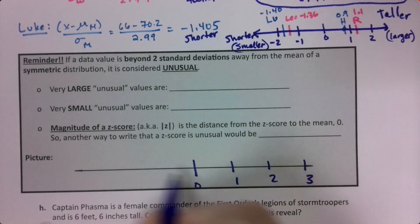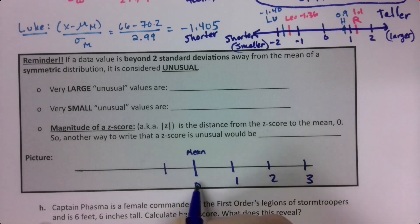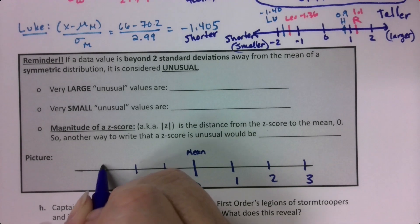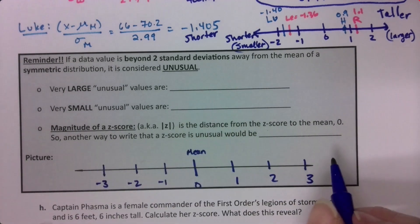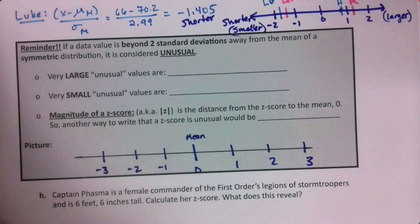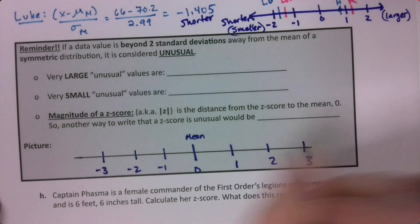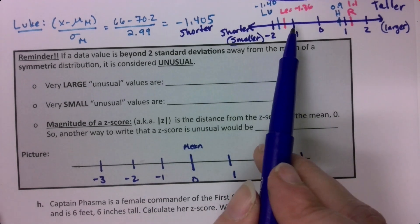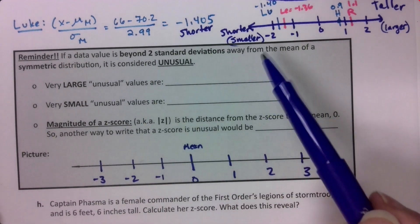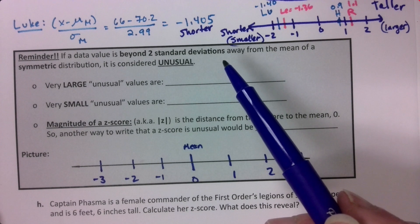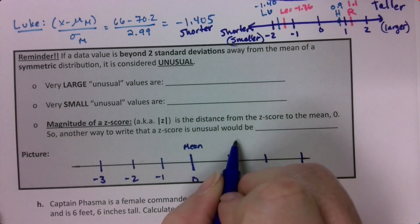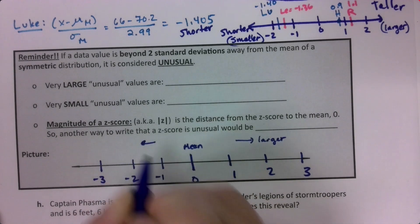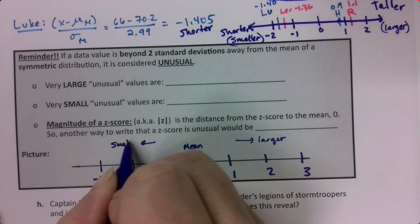There's a number line, zero's in the middle. This is the mean. Negative values are over here, positive values are over there. The larger values are on the right side. The farther you are to the right, even if you're negative, the larger you are, the taller you are. The farther to the left, the shorter you are. Going that way is larger, going that way is smaller.